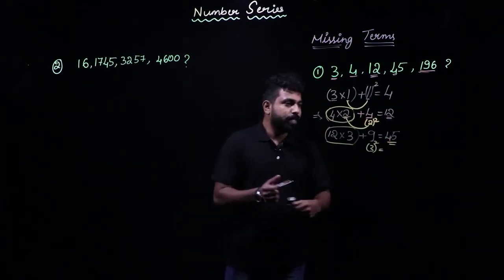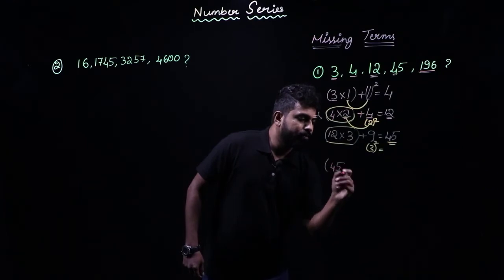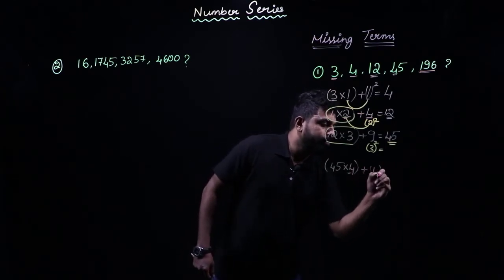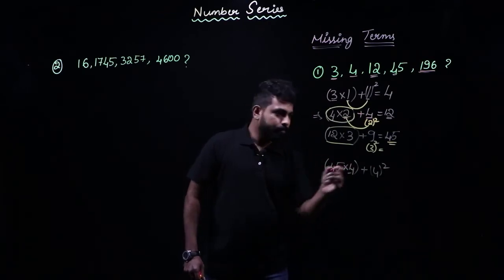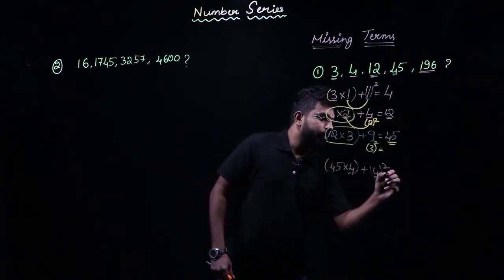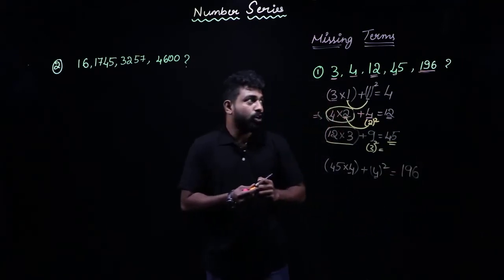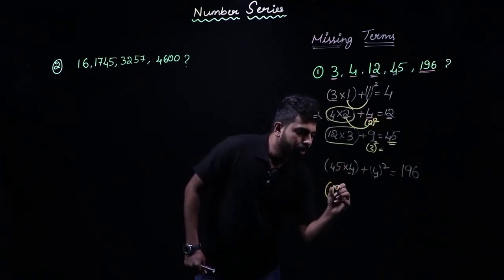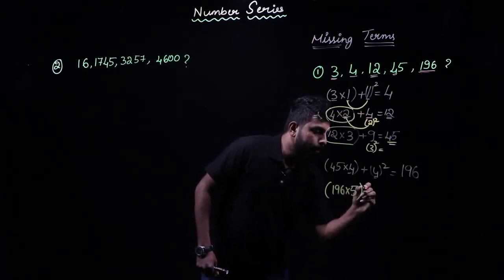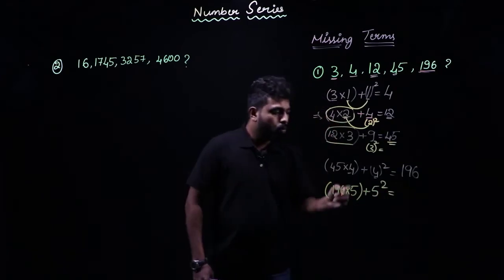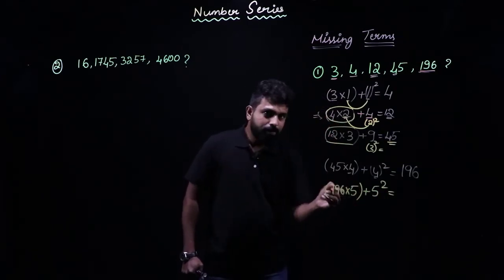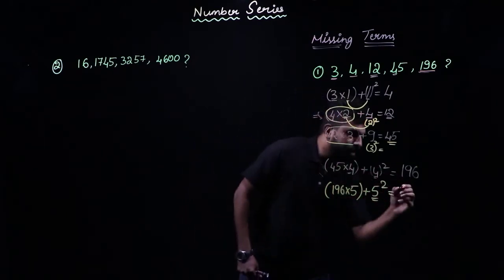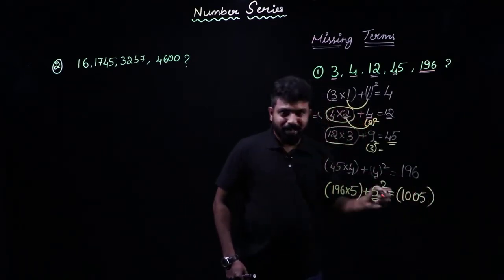Now let us find the missing term. The missing term must be 196 into 5 plus 5². What is 196 into 5? 5 into 100 is 500, 5 into 90 is 450, so 950, plus 5 into 6 is 30, giving 980. Then 980 plus 25 gives me 1005. So 1005 is my final answer.